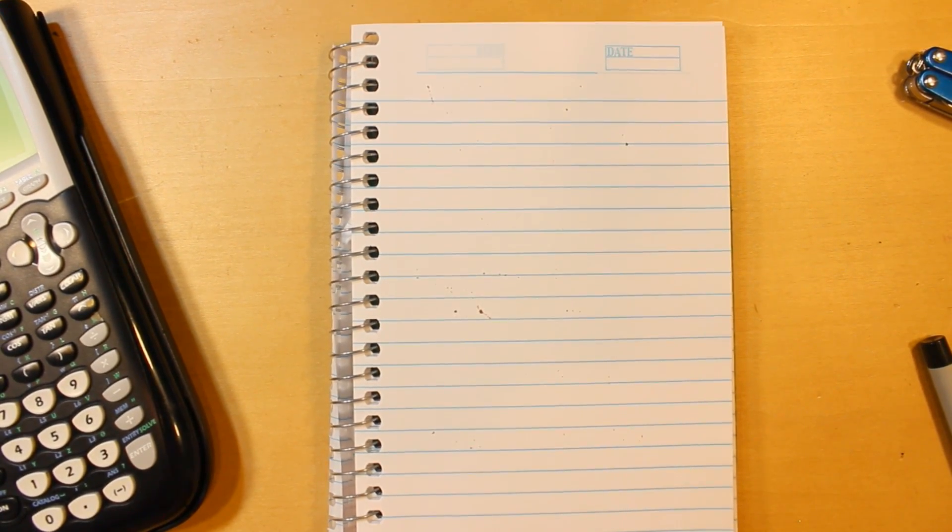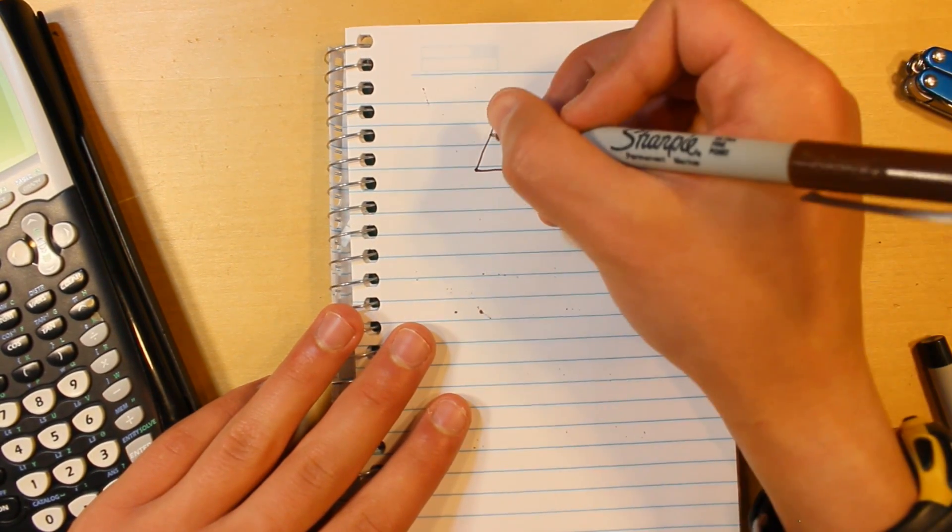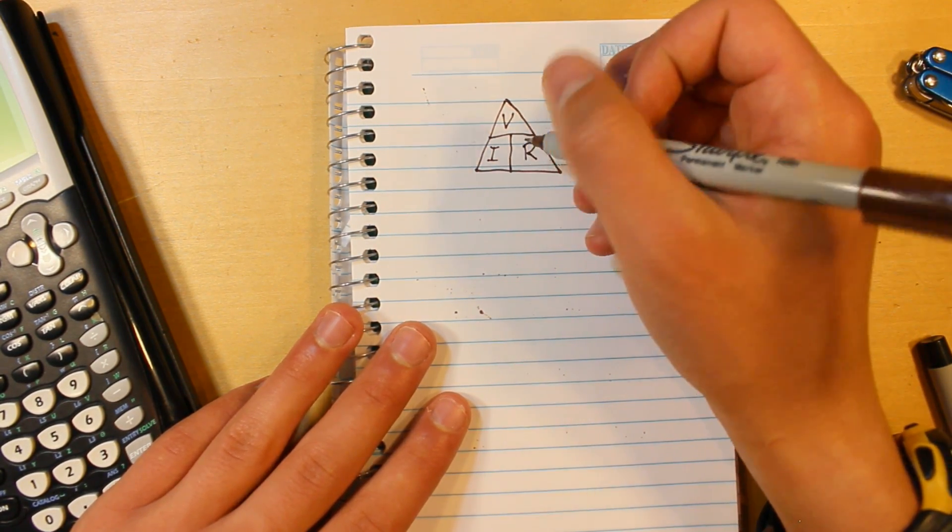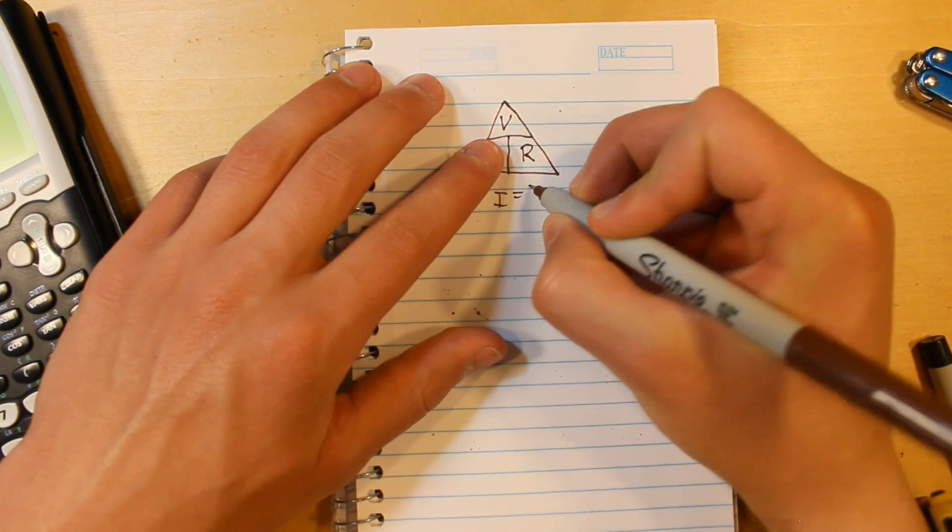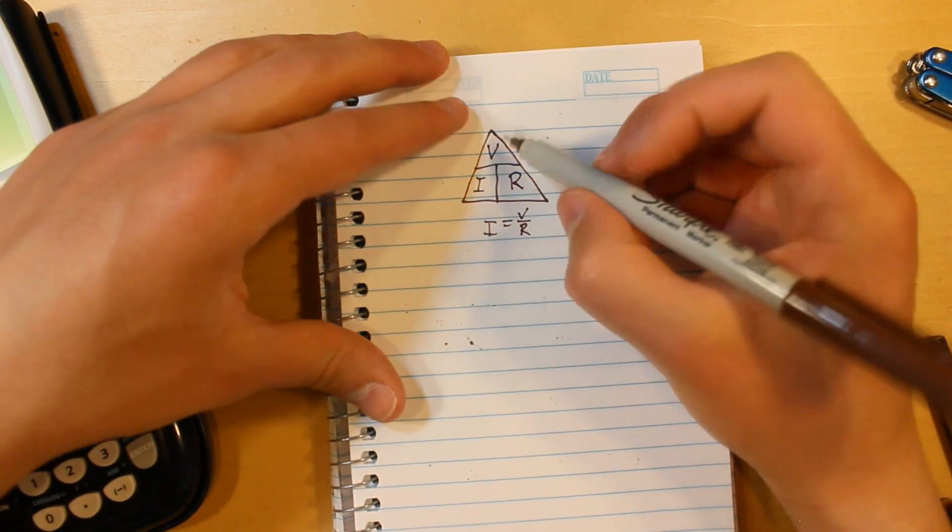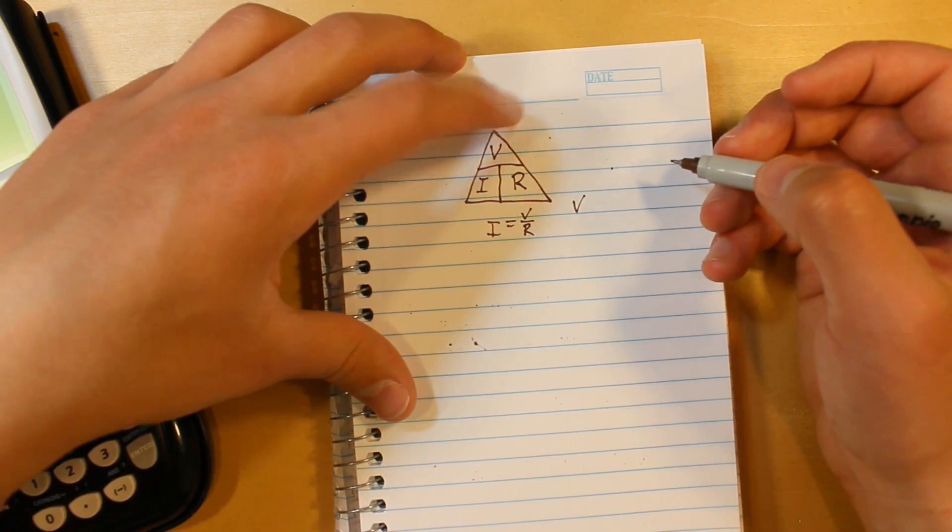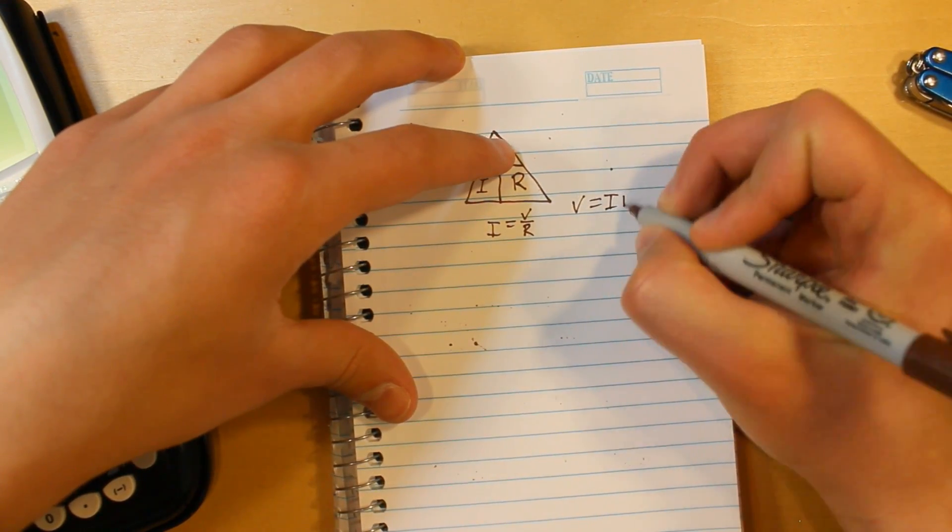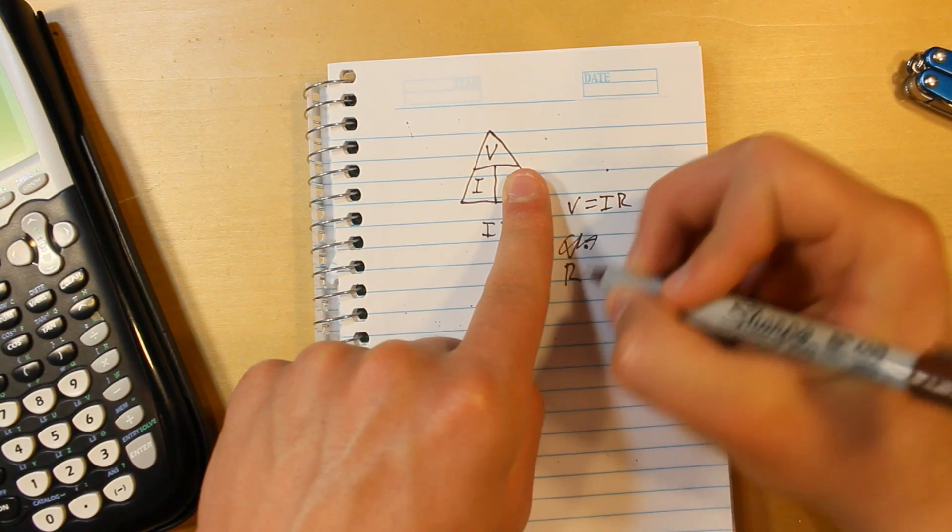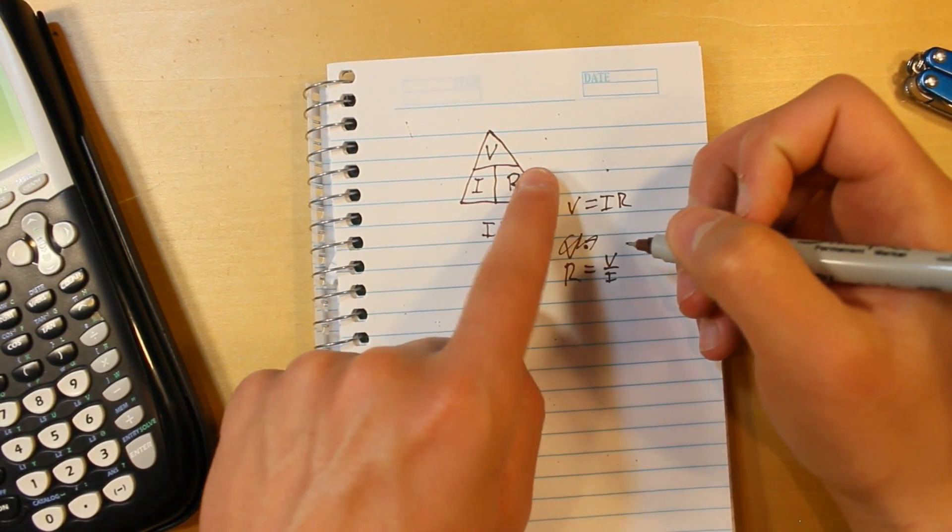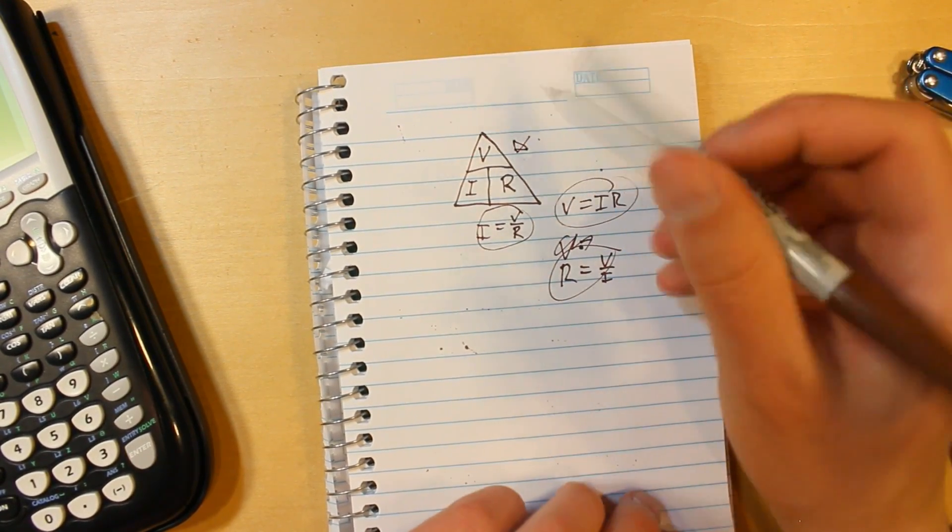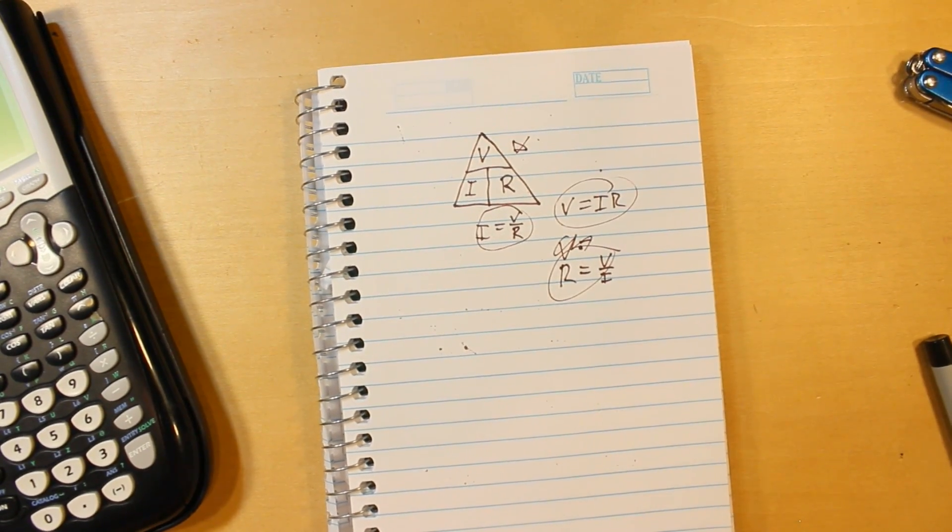Okay, there's also another good way to remember this kind of thing. So if we take a triangle, divide it up into three sections, put V on top, I on one side, and R on the other. And if you cover up the I, you get I equals V divided by R, which is true. Or you could cover up the V. The number you're covering up is the thing that the other two equal. So cover up V equals I times R, which is also true. And all three of these are true. And this is just a really good way to remember each equation.